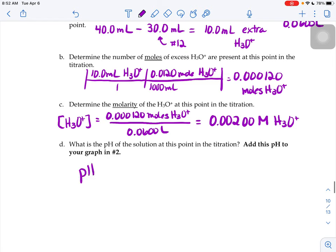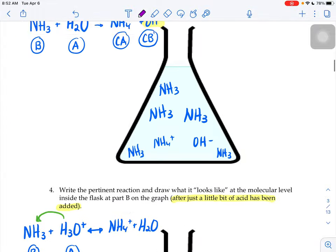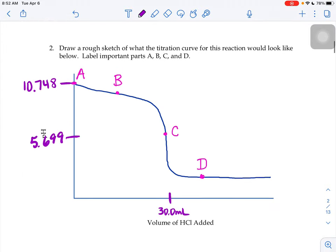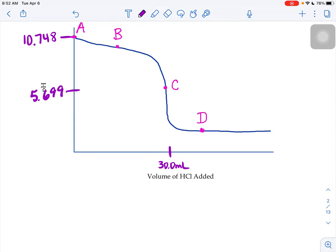And then if we want the pH we would do the negative log of that concentration, 2.699. And it asks us to add this pH to your graph in number two. So 2.699, I'm going to go all the way back here, 2.699 there it is. 2.699 is our pH when we've added 40 milliliters worth of acid.